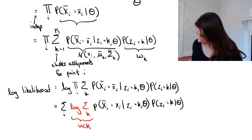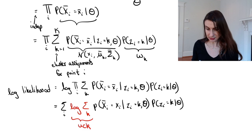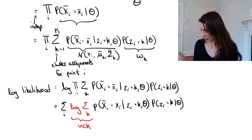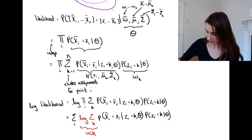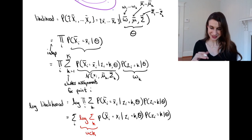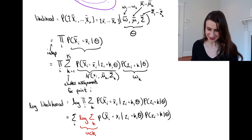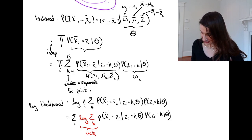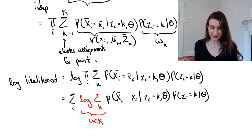The EM algorithm is going to have us alternate between two updates: first we update the cluster assignments z, and then we update all the parameters theta — which consists of w, mu, and sigma. Then we update z again, then theta, and so on. It's an alternating minimization scheme, kind of like what we did for k-means. We'll take a pause from Gaussian mixture models to explain EM in general, and then we'll apply EM exactly on this problem.